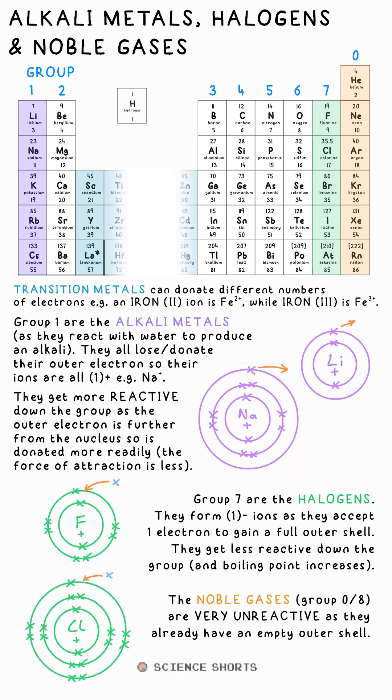Transition metals can donate different numbers of electrons. For example, an iron ion can be Fe²⁺ or Fe³⁺ — it can donate two or three electrons.